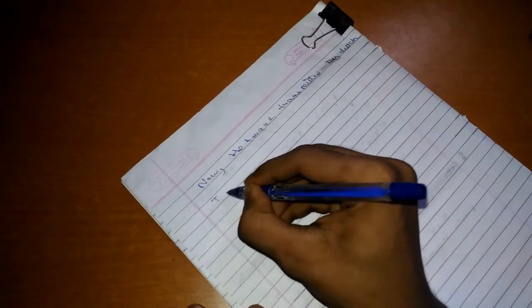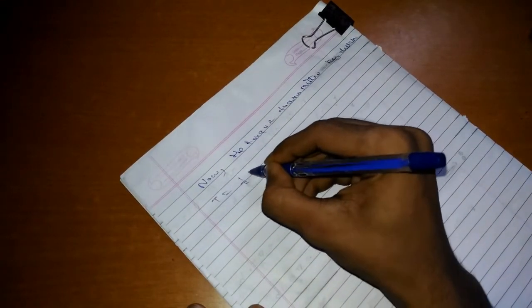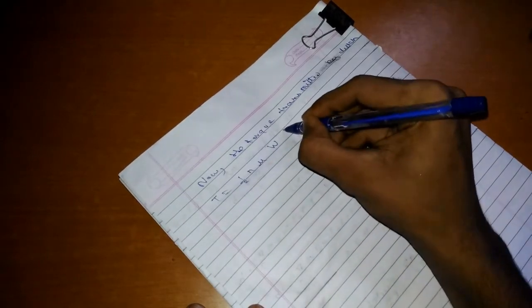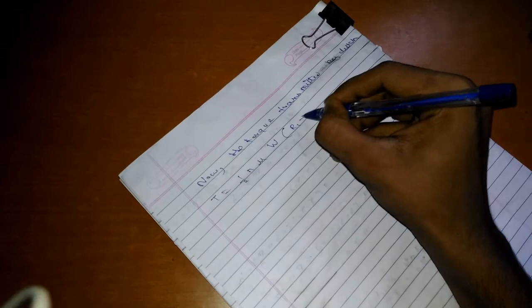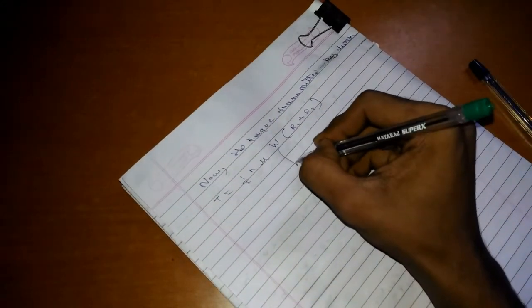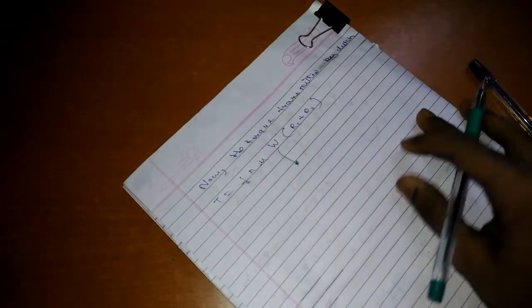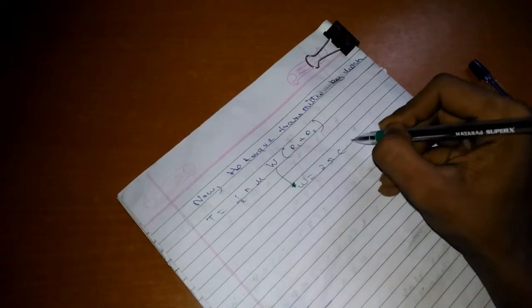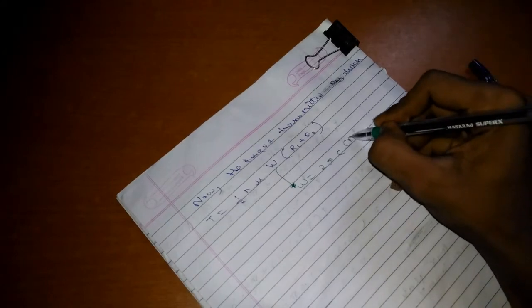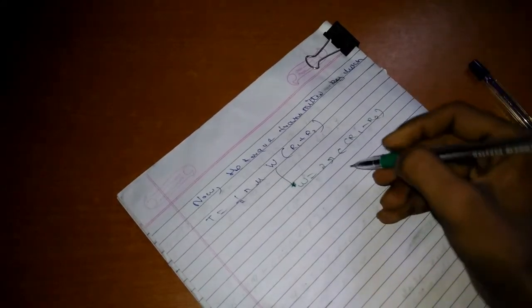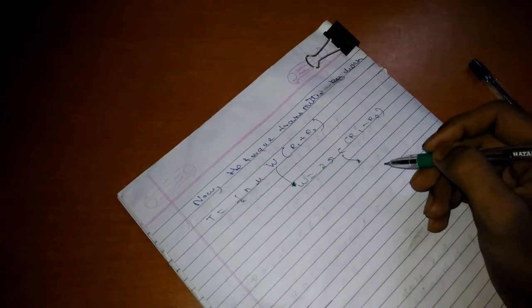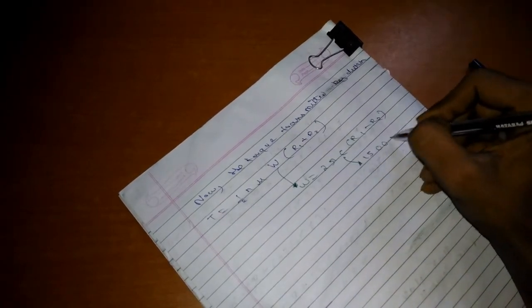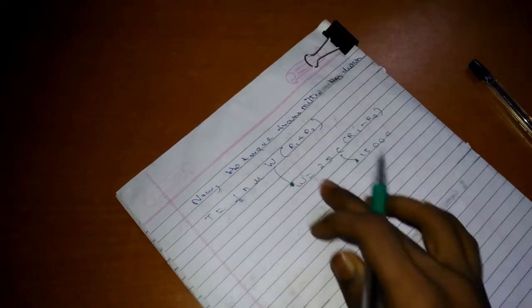Now, the torque transmitted by the clutch can be given as T equals half Nμ W times (R1 plus R2). Here we need to find the number of plates. W equals 2πC times (R1 minus R2), where we know the value of C, that is 15000.